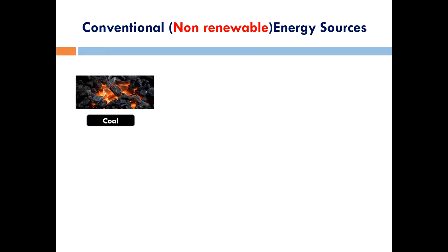Today, many power plants in India are running on coal by burning it. Coal is of different types according to carbon content: anthracite, bituminous, and lignite. It is very useful in the production of electricity.